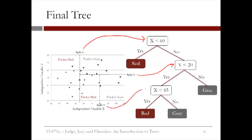The third split checks whether or not the variable x is less than 85. If yes, then the model says to predict red, and if no, the model says to predict gray. There are a couple of things to keep in mind when reading trees. In this tree, and for the trees we'll generate in R, a yes response is always to the left, and a no response is always to the right.